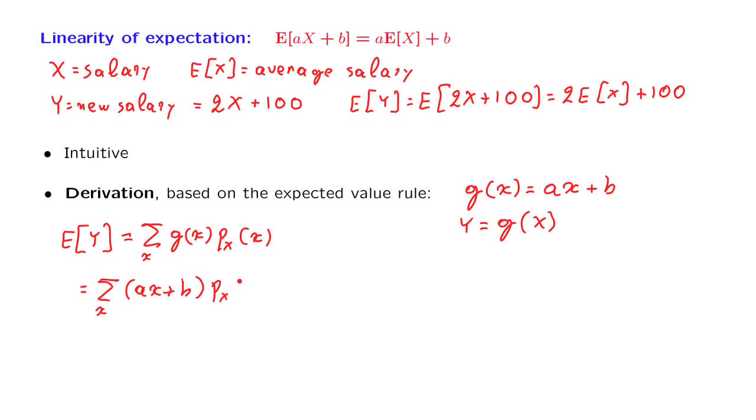And then we separate the sum into two sums. The first sum, after pulling out the constant of a, takes this form, and the second sum, after pulling out the constant b, takes this form.